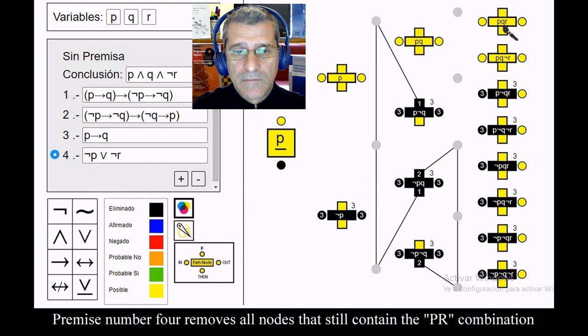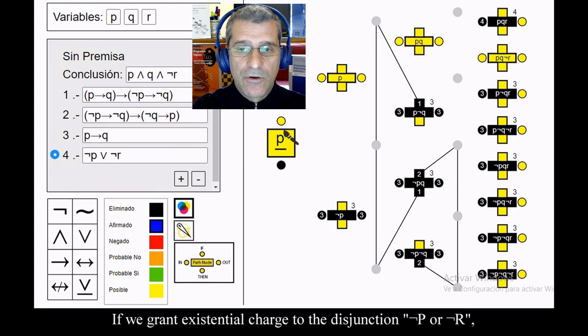If we run an existential charge to the disjunction node p or node r, then the node p, q node r necessarily exists here and now, as well as all its components.